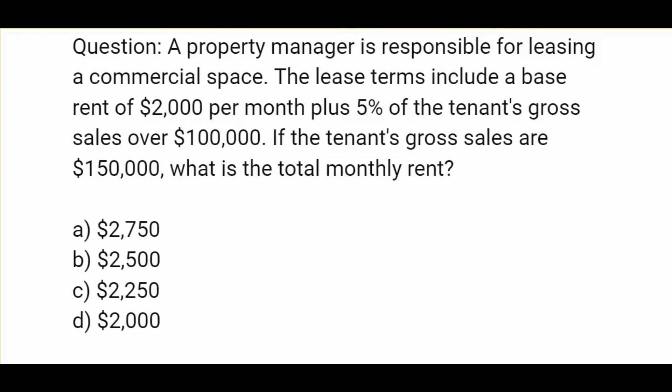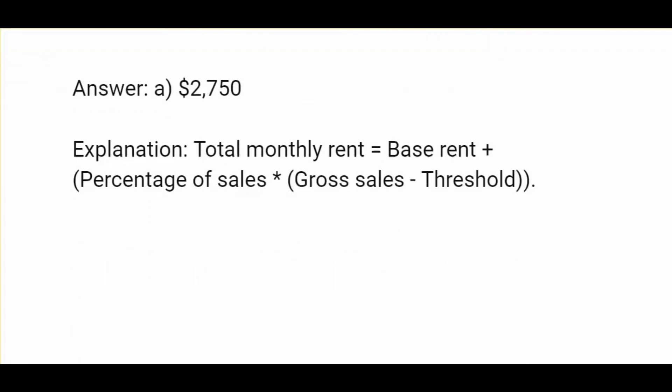A property manager is responsible for leasing a commercial space. The lease terms include a base rent of $2,000 per month plus 5% of the tenant's gross sales over $100,000. If the tenant's gross sales are $150,000, what is the total monthly rent? Options are $2,750, $2,500, $2,250, or $2,000. The answer is $2,750. Total monthly rent equals base rent plus percentage of sales times gross sales minus threshold.